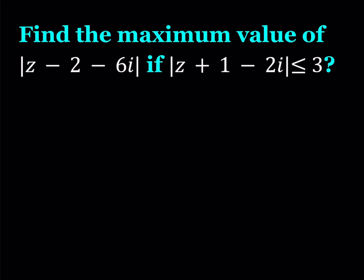Hello everyone. In this video we're going to be solving a problem with complex numbers. So first time, I'm excited. Let's get started. We are supposed to find the maximum value of the absolute value of z minus 2 minus 6i, if the absolute value of z plus 1 minus 2i is less than or equal to 3.